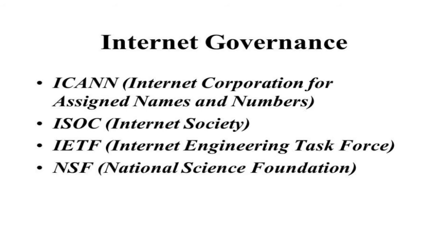The second body is ISOC — Internet Society. It is basically an international professional society open for everybody, with more than 200 organizations and around 20,000 individuals as members from around 180 countries. It ensures global cooperation and coordination for the internet.